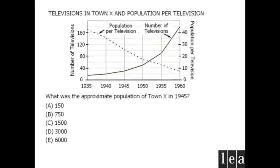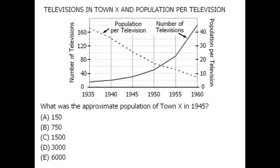Alright, to begin, let's determine the approximate number of television sets in 1945. Using our chart, we can see that this is equal to approximately 30.